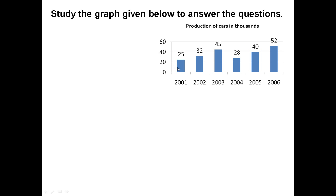A graph is given in which production of cars is shown in thousands. Years 2001, 2002, 2003, 2004, 2005, and 2006 show production of 25,000, 32,000, 45,000, 28,000, 40,000, and 52,000 respectively. Based on this graph we have to answer a question.